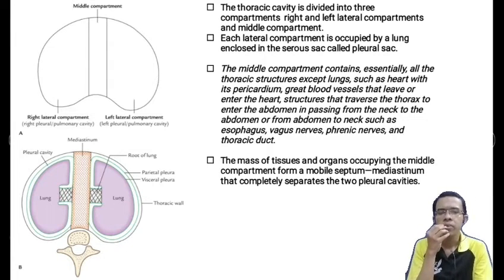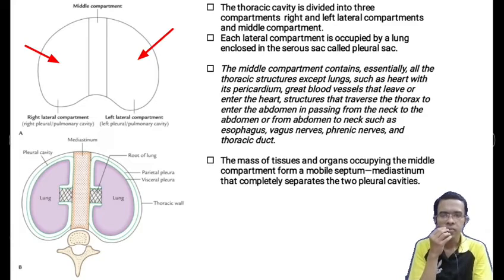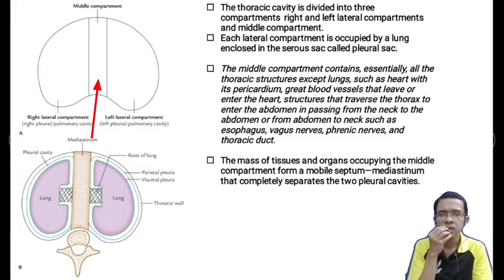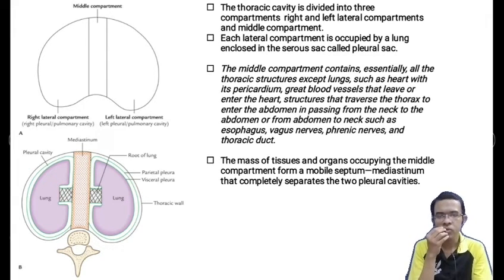Now I will talk about the thoracic cavity to understand the disposition of the pleura. The thoracic cavity is divided into three compartments: right lateral, left lateral, and middle compartment. Each lateral compartment is occupied by a lung enclosed in a serous sac called the pleural sac. The middle compartment contains essentially all the thoracic structures except the lungs — such as the heart with pericardium, great blood vessels, esophagus, vagus nerve, phrenic nerve, and thoracic duct. The mass of tissue and organs occupying the middle compartment form a mobile septum called the mediastinum, which completely separates the two pleural cavities.